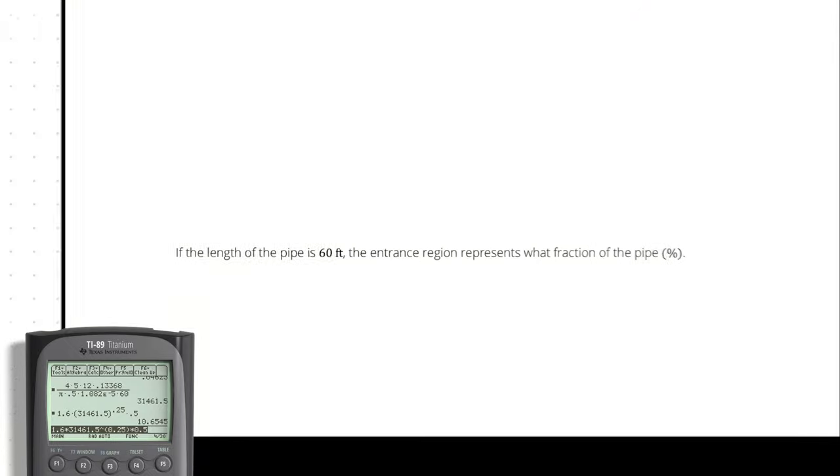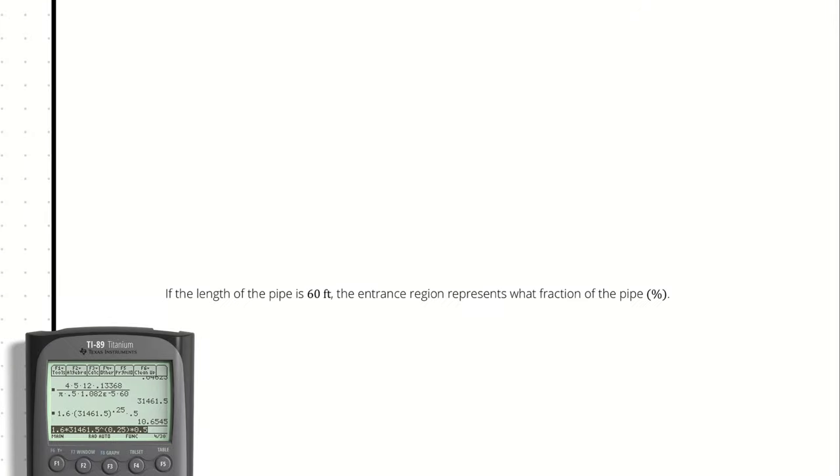Then a follow-up question. If the length of the pipe is 60 feet, the entrance region represents what fraction of the pipe?